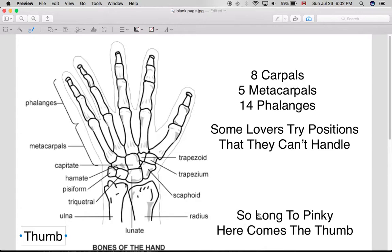So it goes scaphoid, lunate, triquetral, pisiform, which is from the thumb to the pinky. And then hamate, capitate, trapezoid, trapezium, here comes the thumb, which is from the pinky to the thumb side.